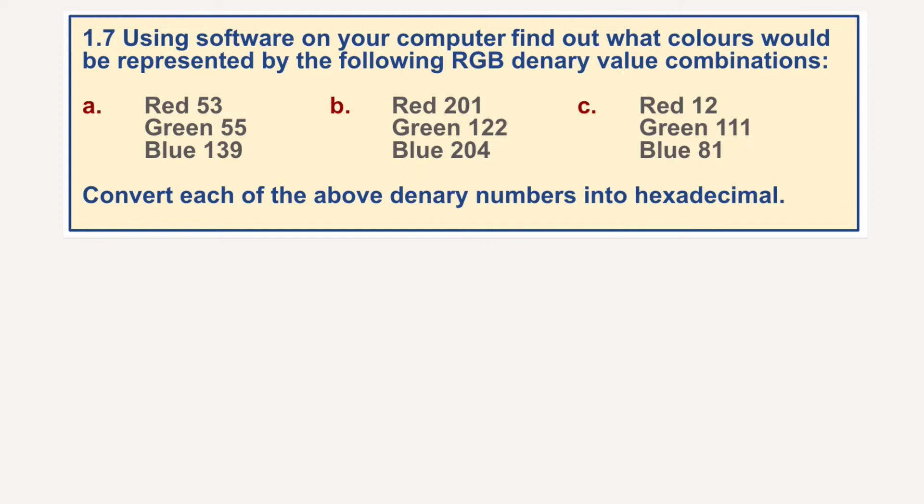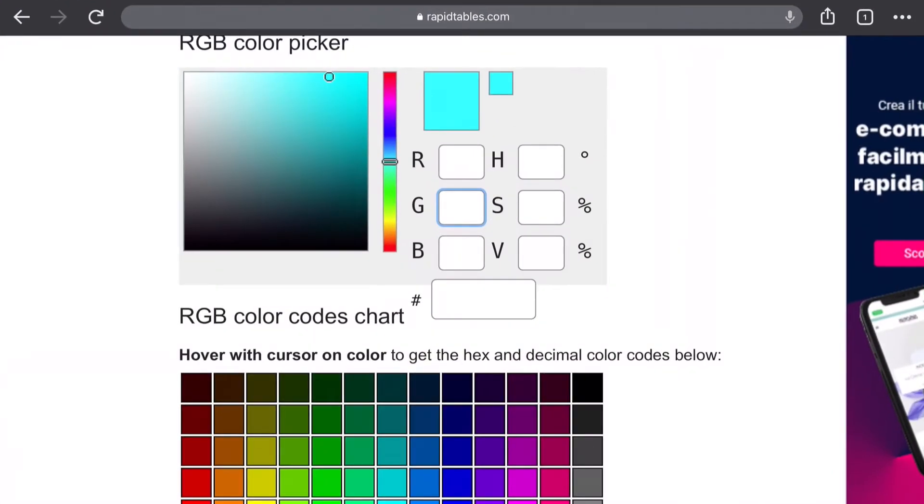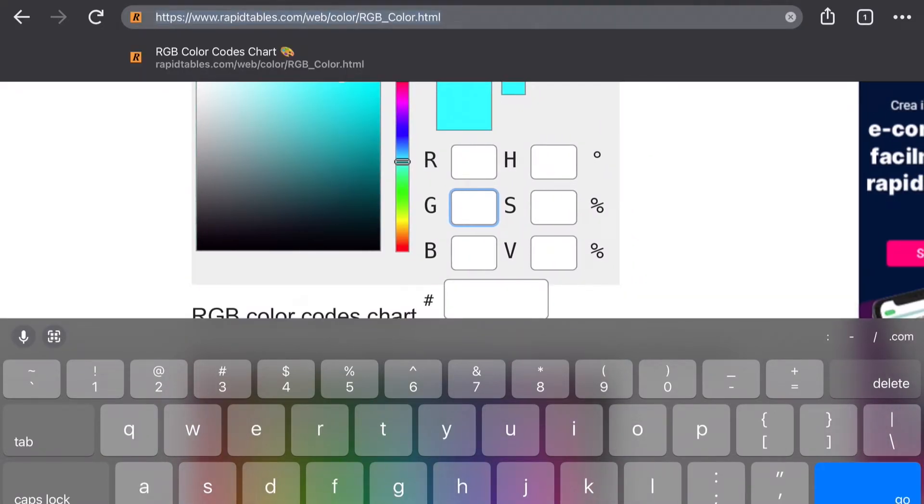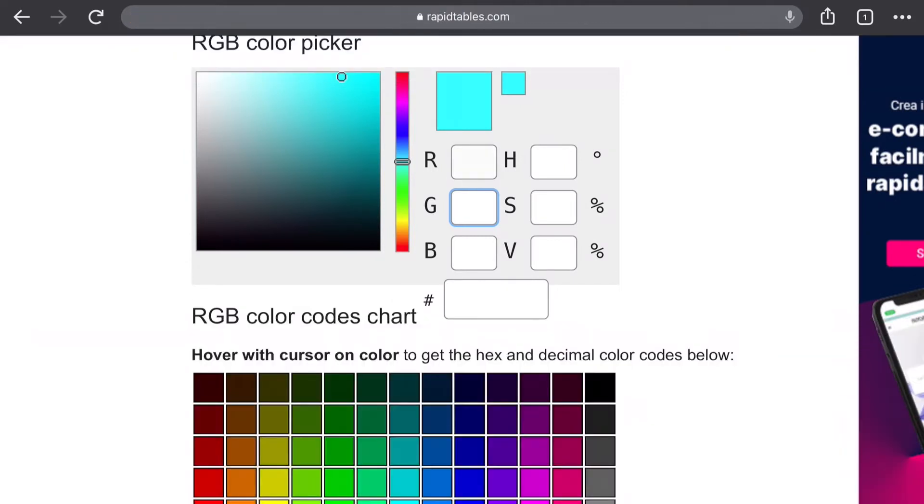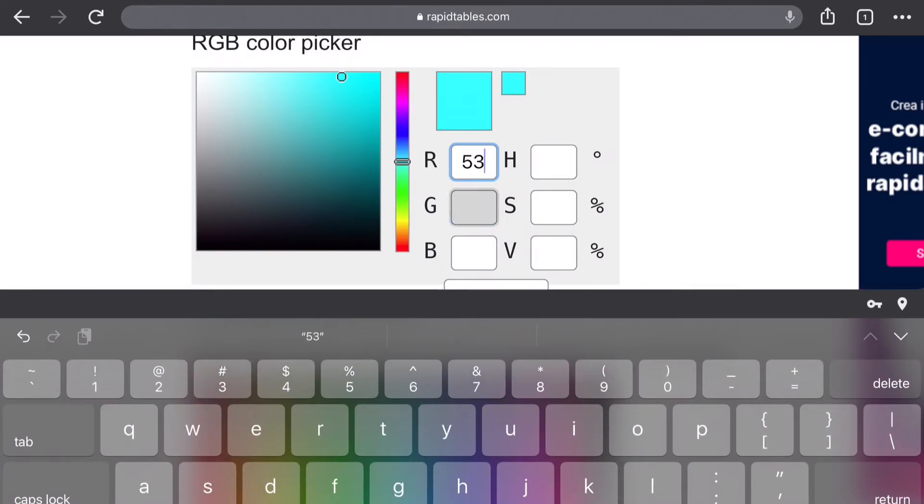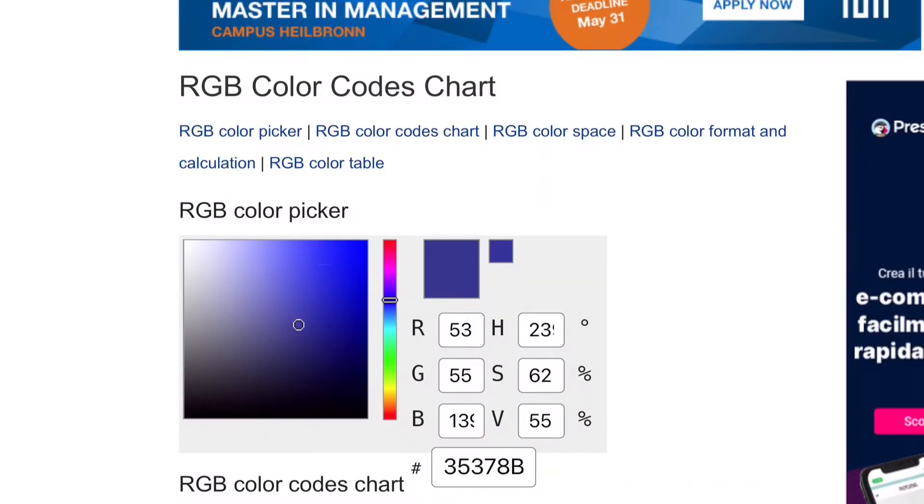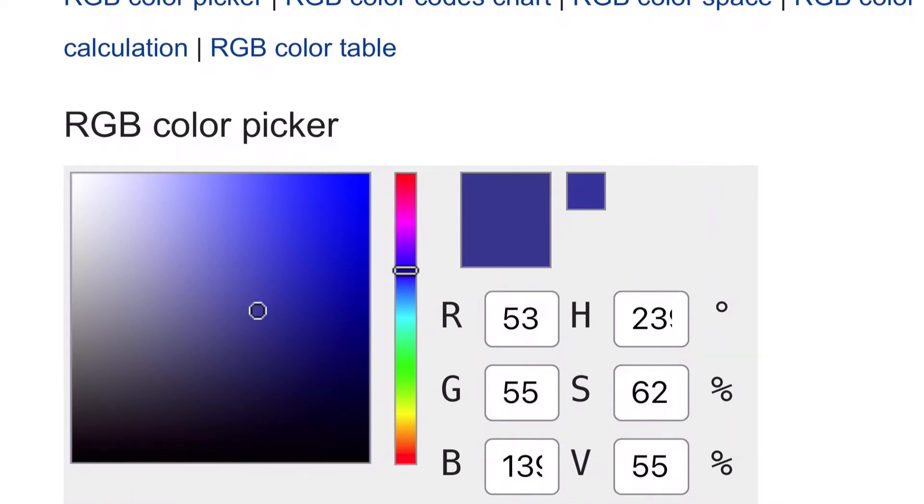Let's have a look at the first one. If I go to rapidtables.com, and I type in the value for red, which was 53, and green, which was 55, and blue, which was 139, and return that, we can see a nice purpley-blue color. So that's red 53, 55, and 139, and it's given us the hex value there.